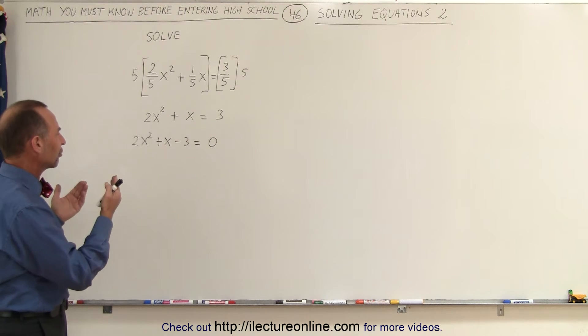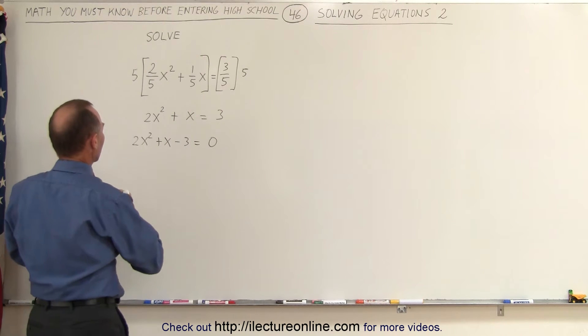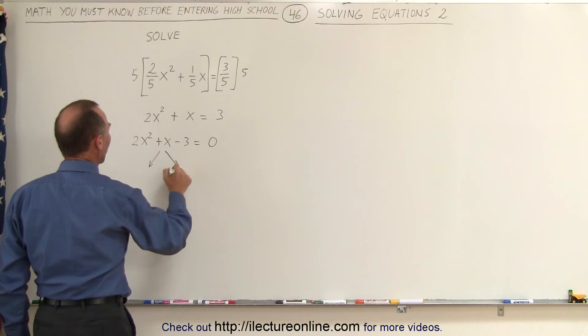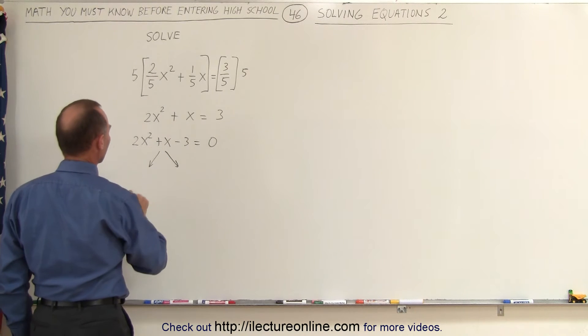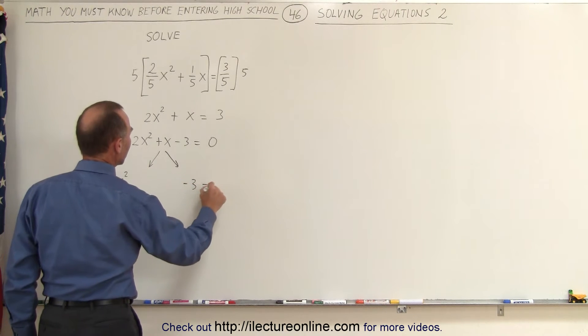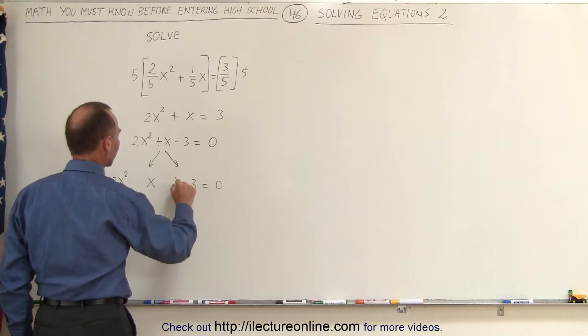So let's see if we can actually factor this. To do that, we're going to take the middle term and write it as the sum of two middle terms. So we write 2x squared minus 3 equals 0, and the plus x will become two middle terms in terms of x.